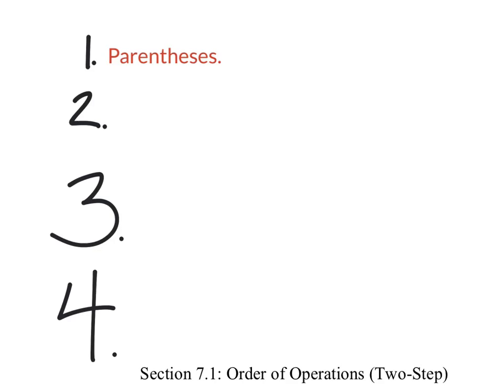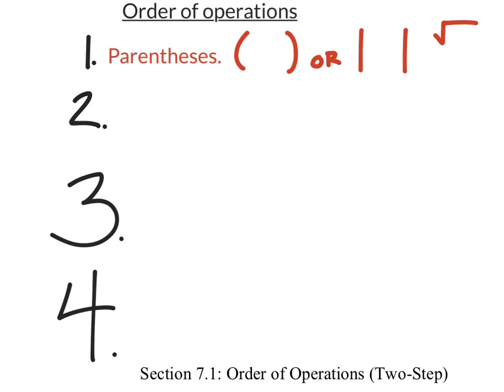Steps three and four are shown bigger because they each involve two different operations. We're not going over all of the operations — you'll expand on this more later. The first step is parentheses, and there are different types. You may see standard parentheses, absolute values, and later on, roots or square roots as well. For our class, we're just looking at parentheses and absolute values for now.